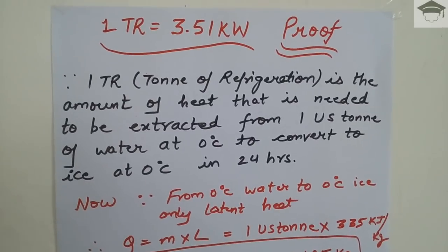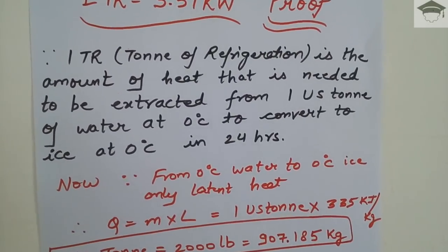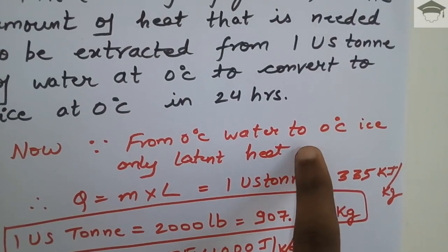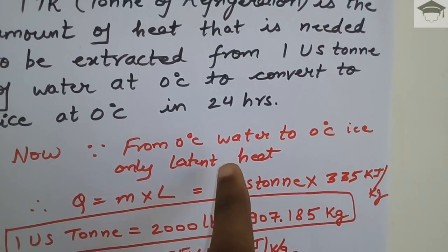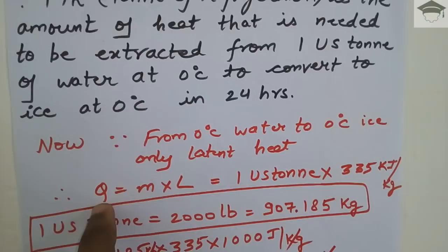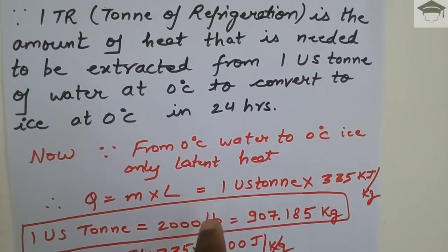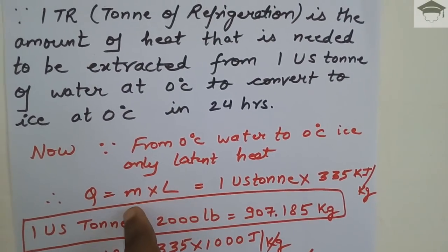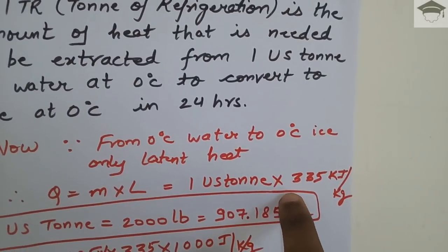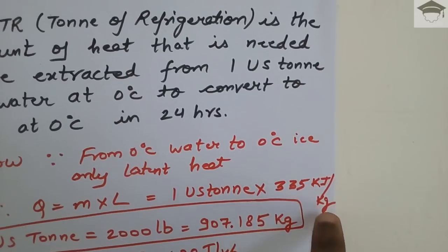The derivation comes directly from the definition. Since we are going from 0°C water to 0°C ice, only latent heat is involved. So Q = m × L, where m is mass (1 US ton) and L is the latent heat of water, which is 335 kilojoule per kg.